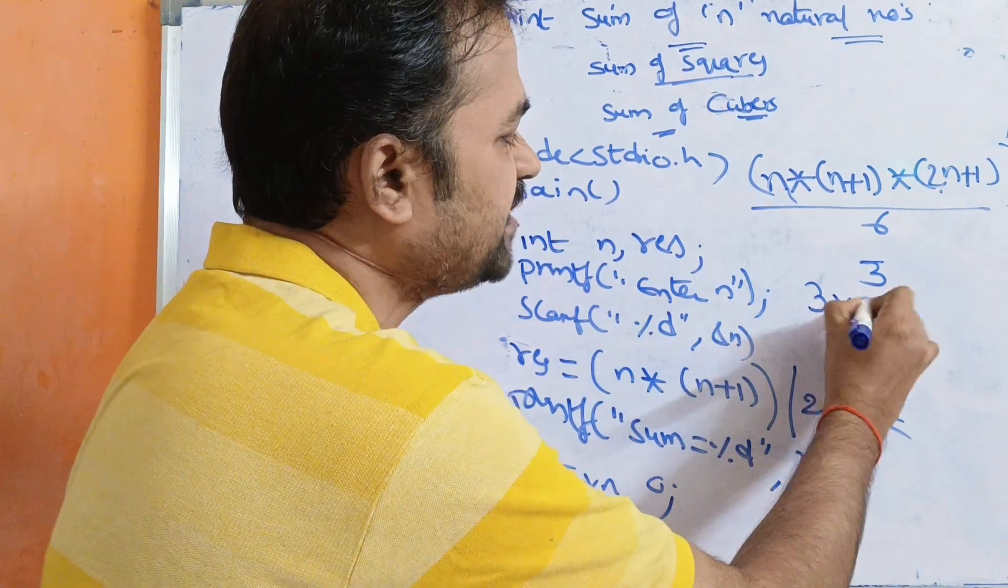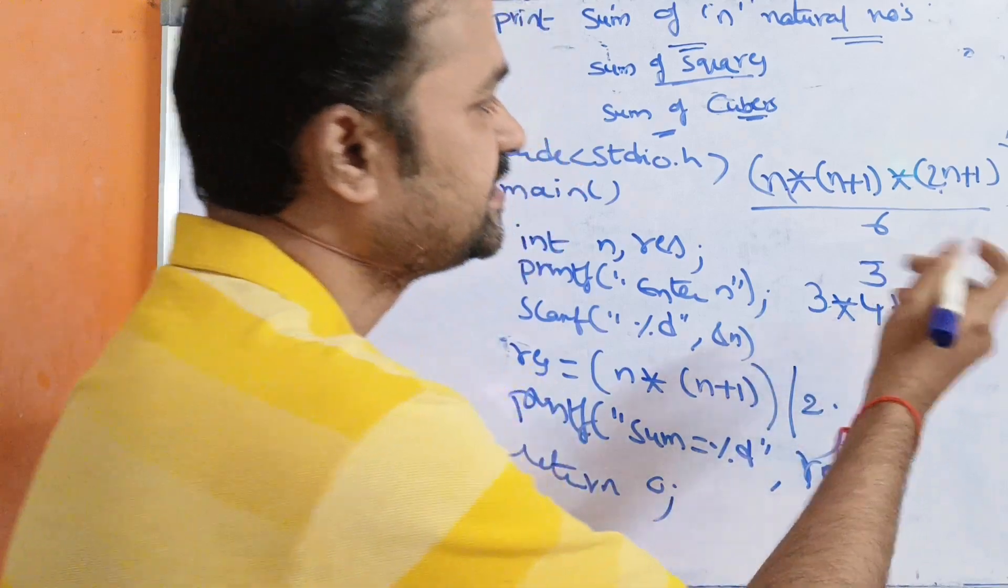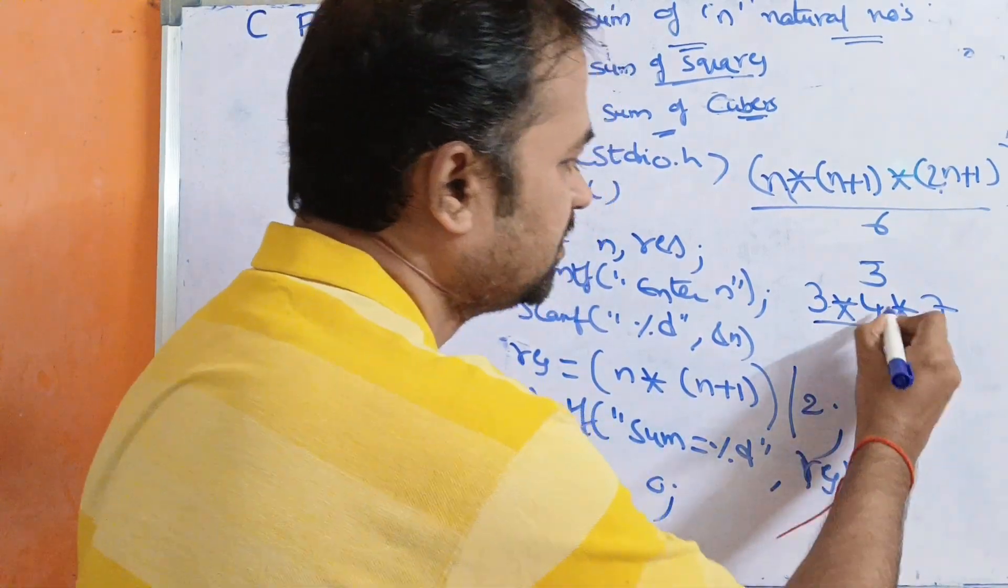Let's see whether our result is correct or not. So 3 into (3+1) is 4, into 2n which is 2 into 3 equals 6, 6 + 1 is 7, divided by 6.